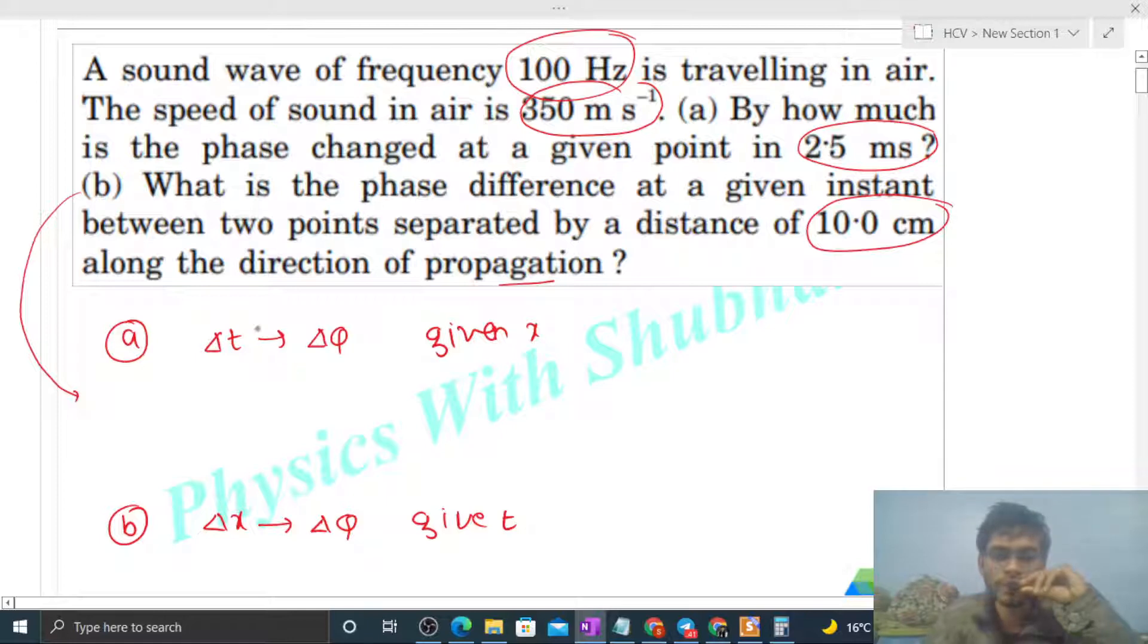Time difference we have to convert: phase difference is equal to 2π divided by time period into time difference. And position difference we have to convert: equivalent phase difference will be 2π divided by wavelength into position difference.